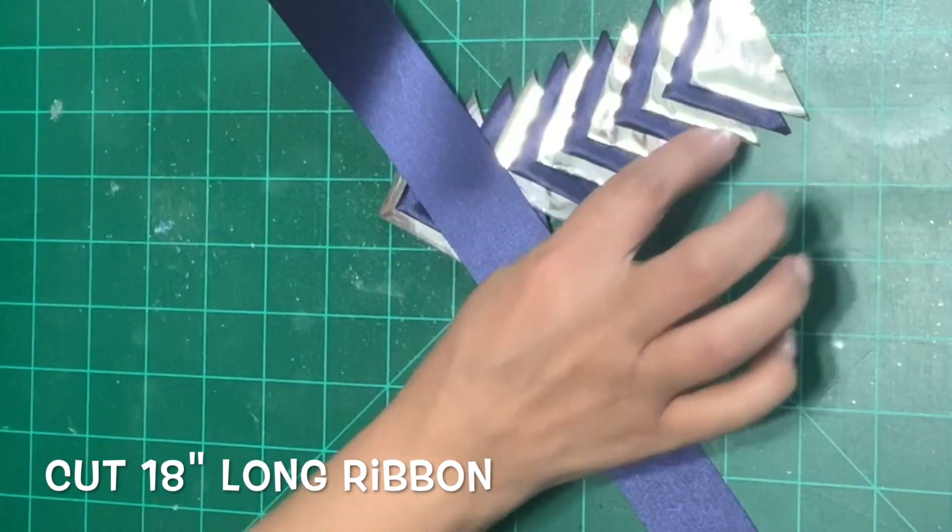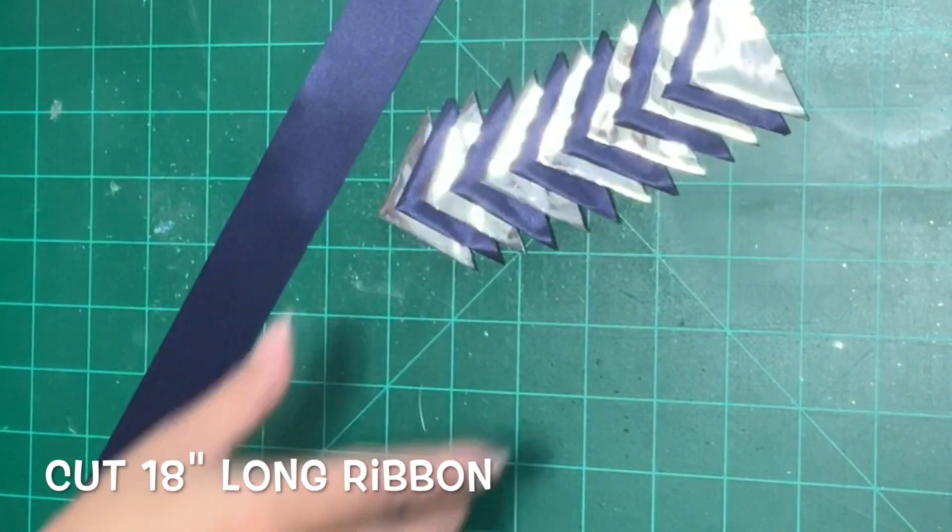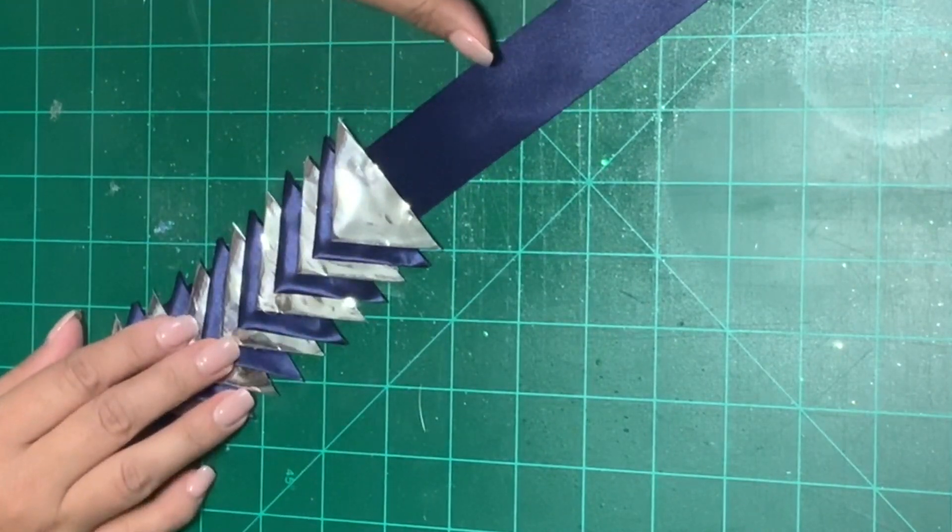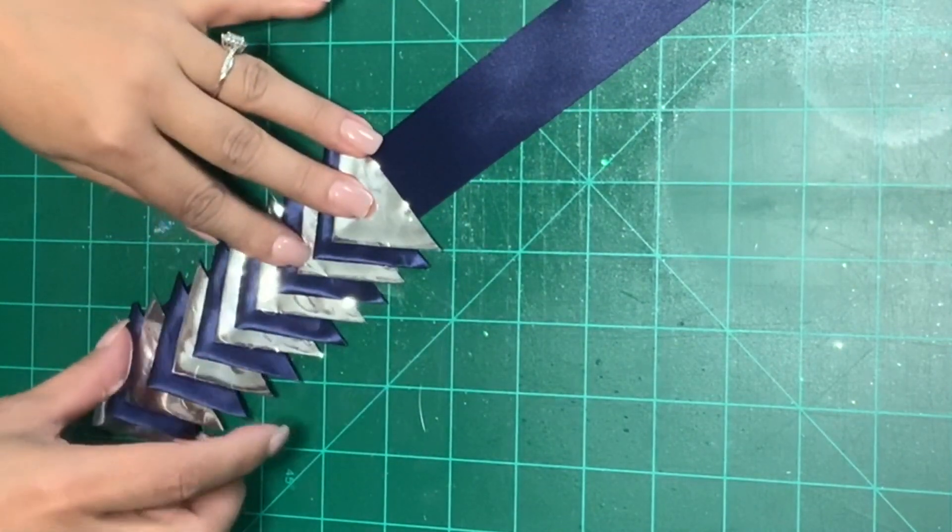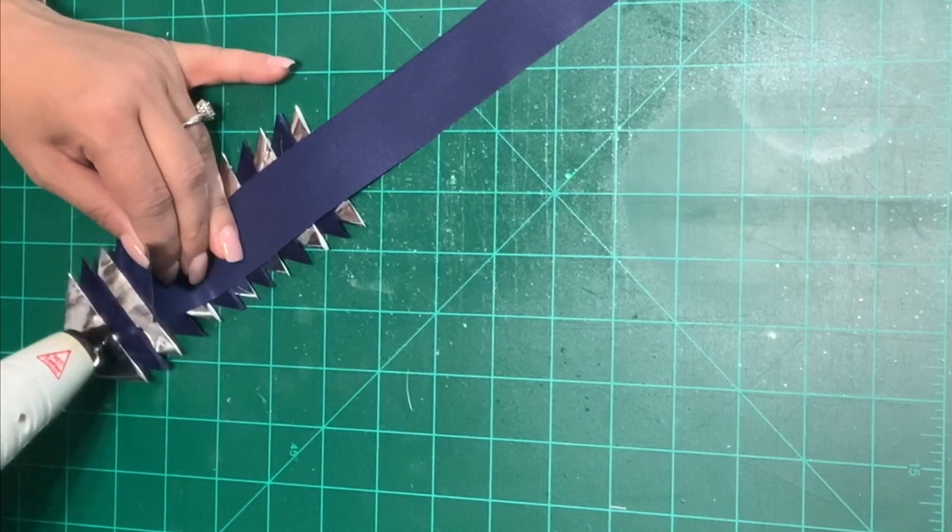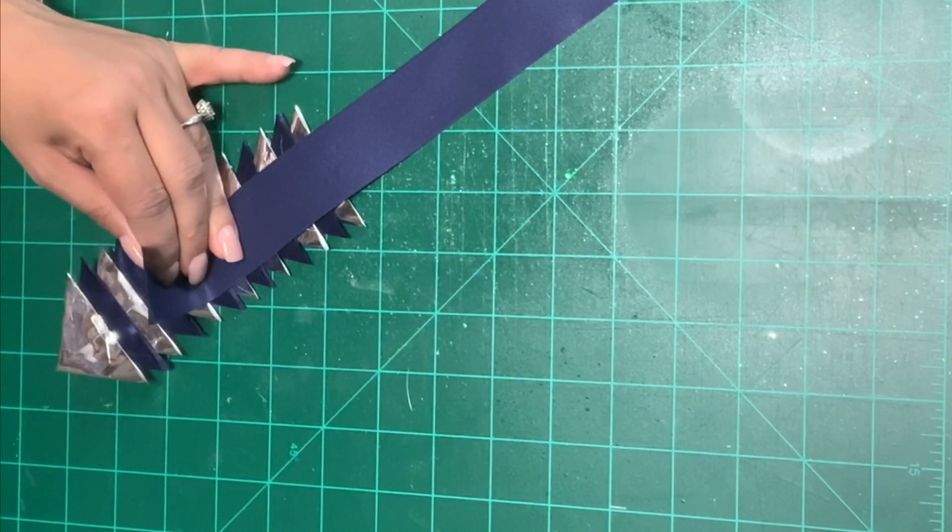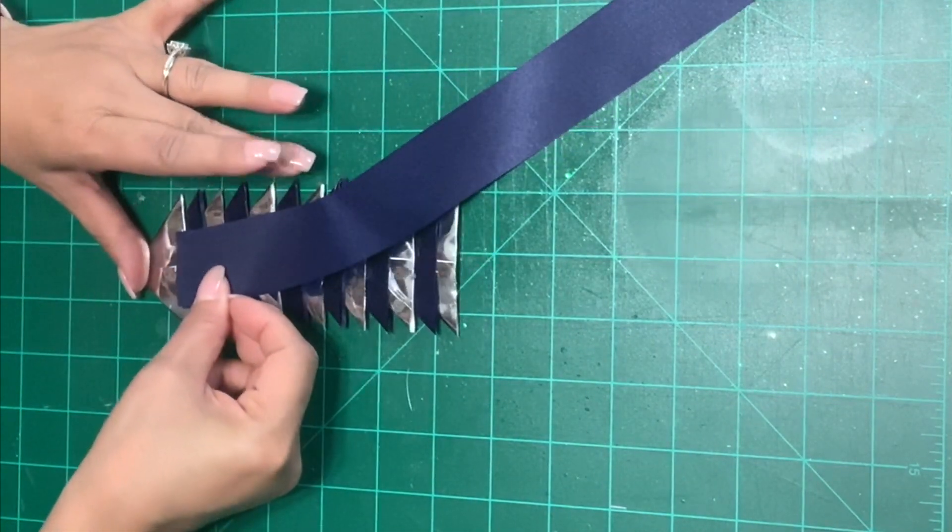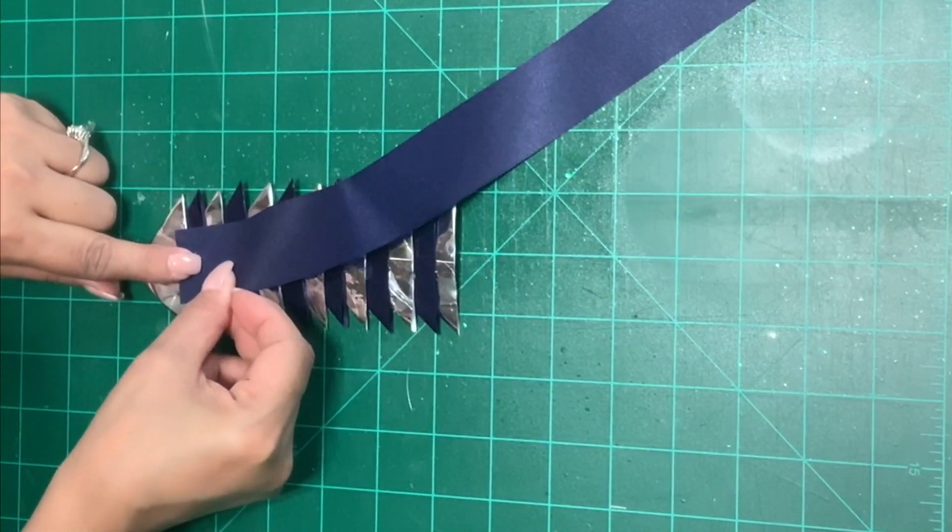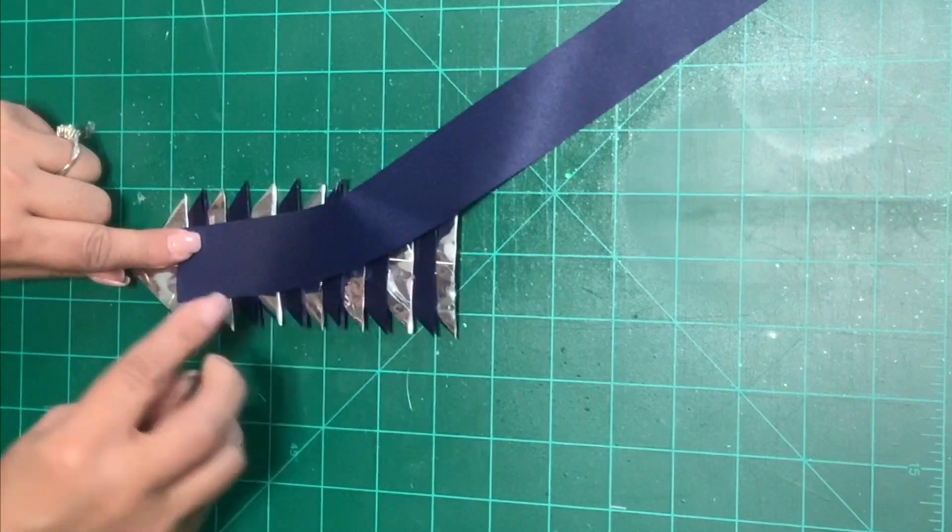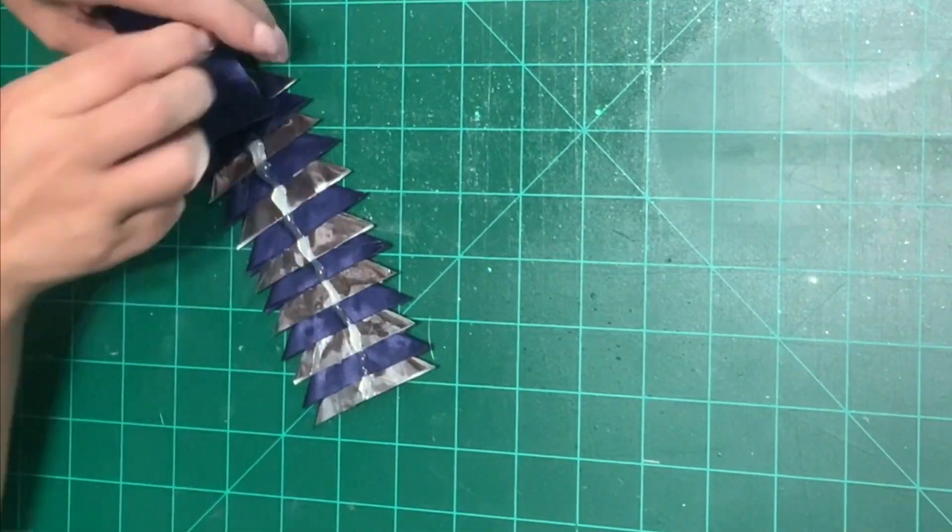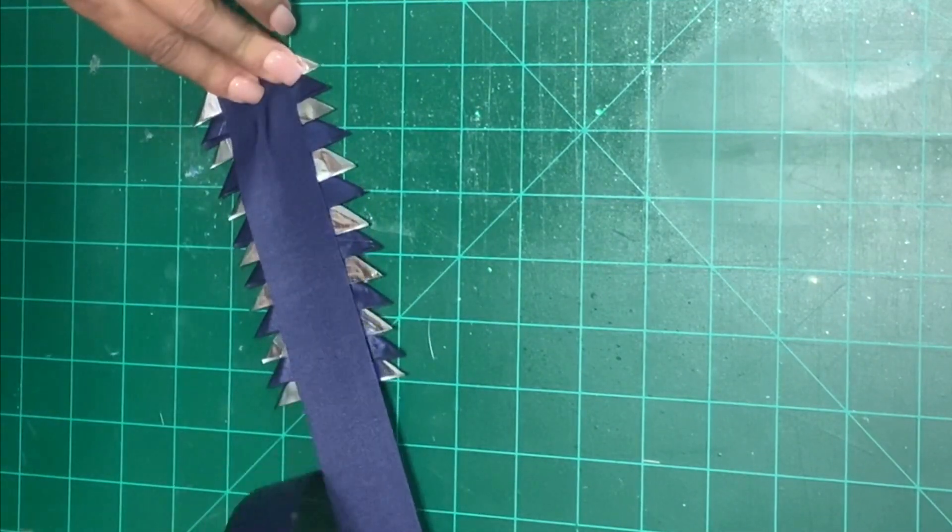Using the same size blue ribbon we used you're going to cut 18 inches long and we are going to attach this ribbon to our arrows. You're going to turn your triangles around and add some glue at the very top of your first triangle. Then you're going to begin to glue down your ribbon. Go ahead and press down and then you can add a strip of glue all the way to the top of your triangles and finish gluing your ribbon down.